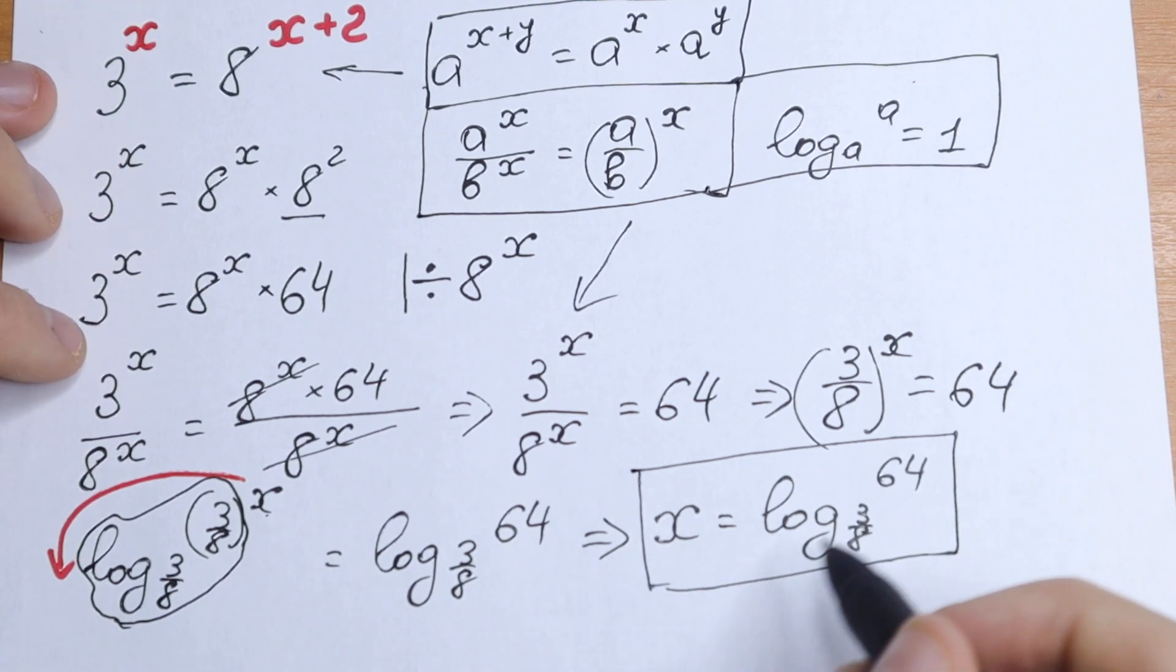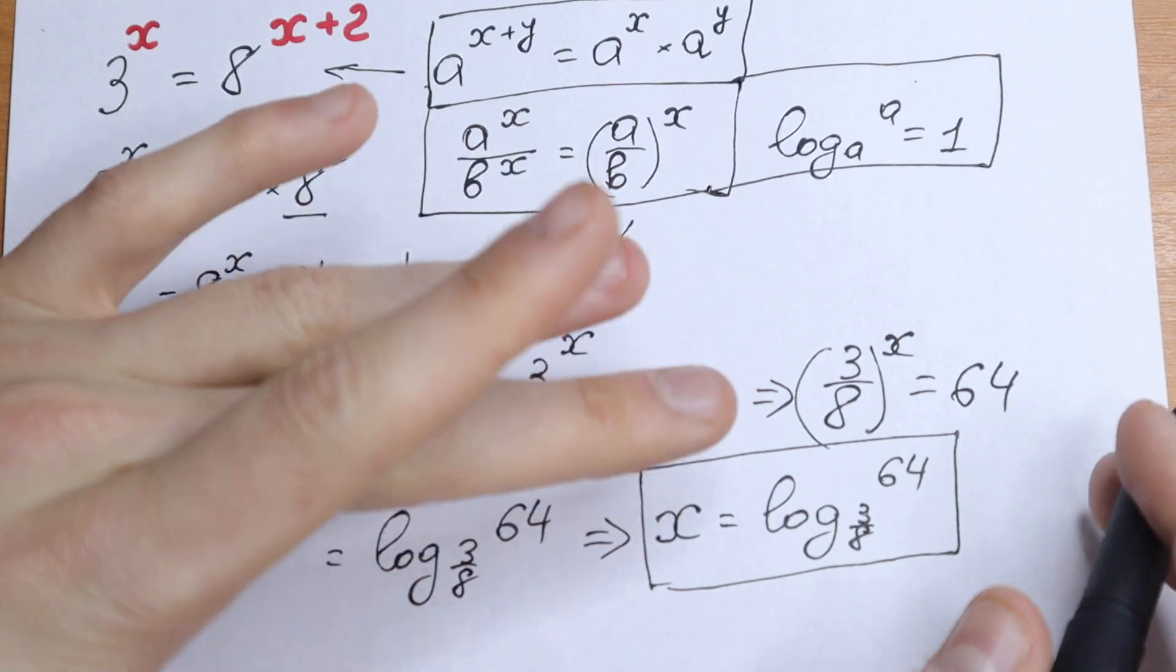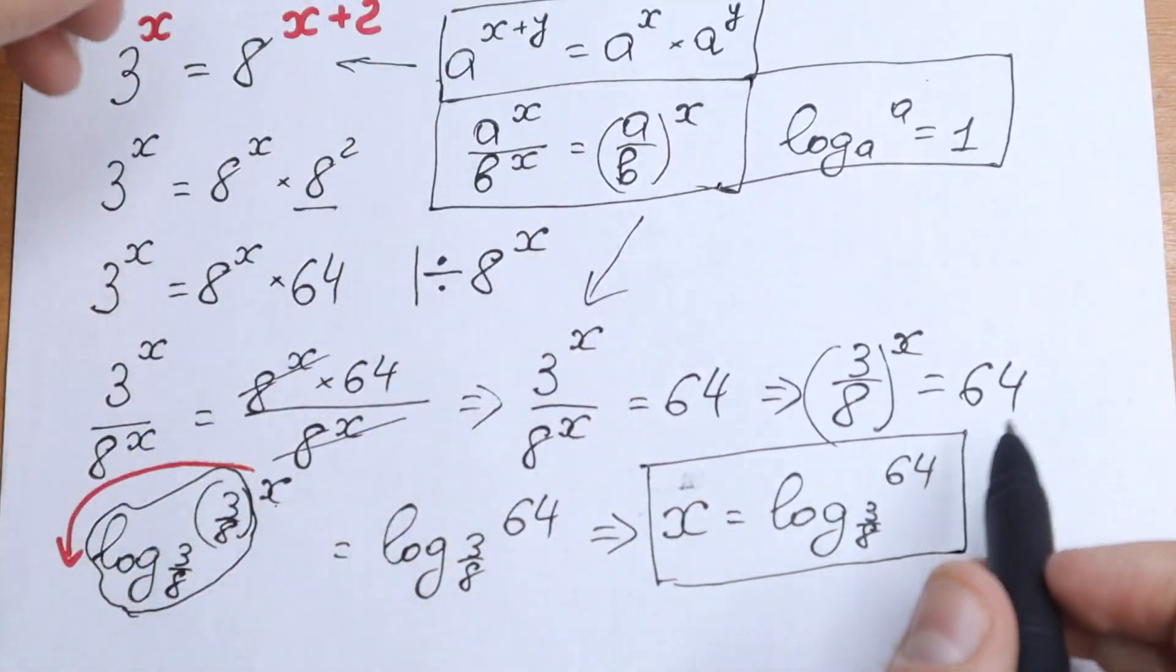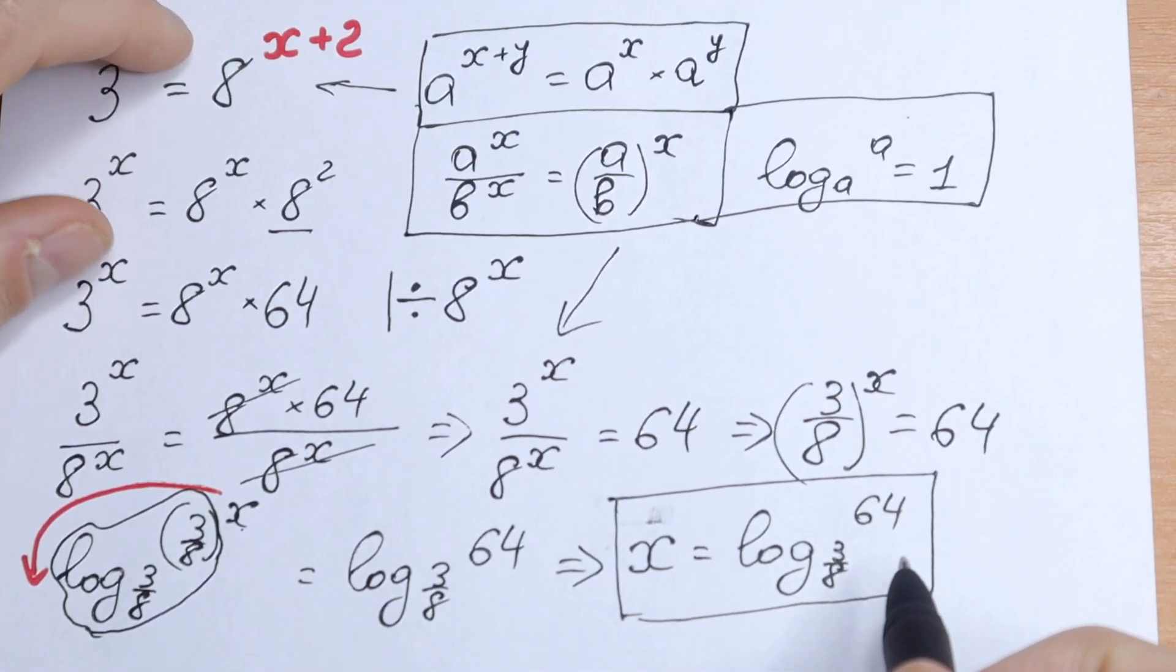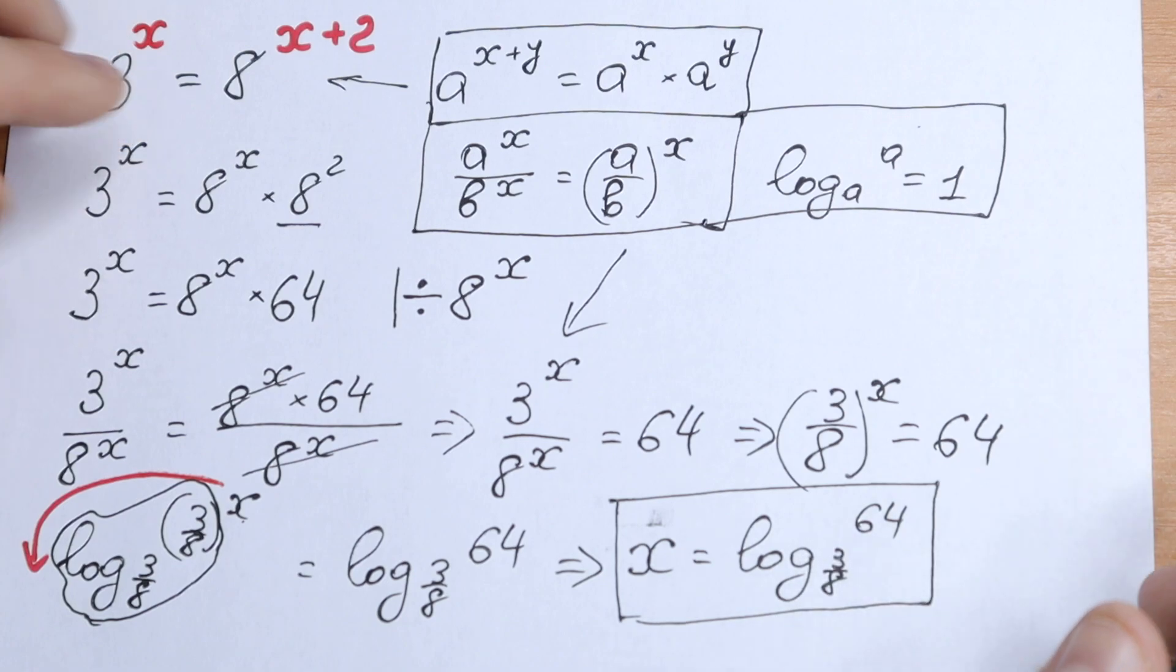Of course, you can simplify this. Your answer is log base of 10, but I want to let this right here because this is the answer. You can easily calculate this on your telephone. And of course if you are interested in the log, you can write it as base of 10. You will have log 64 divided by log 3 over 8.